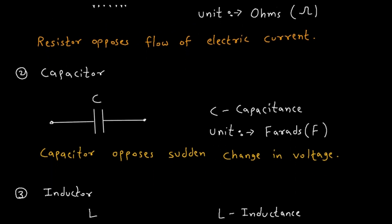Next is capacitor. Capacitor is represented by this symbol. This C represents capacitance, which is the value of capacitor. The unit of capacitance is farads, which is represented by capital F. Capacitor opposes sudden change in voltage.